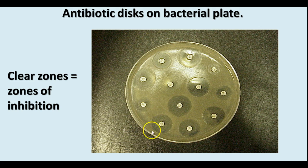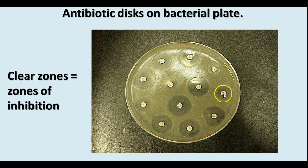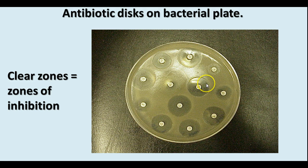Here we see some bacteria. The background on this petri dish is a lawn of bacteria, and these little discs have different kinds of antibiotics on them. The clear zones around them are called zones of inhibition, and this is the way you would determine which antibiotic would work best for that particular infection.